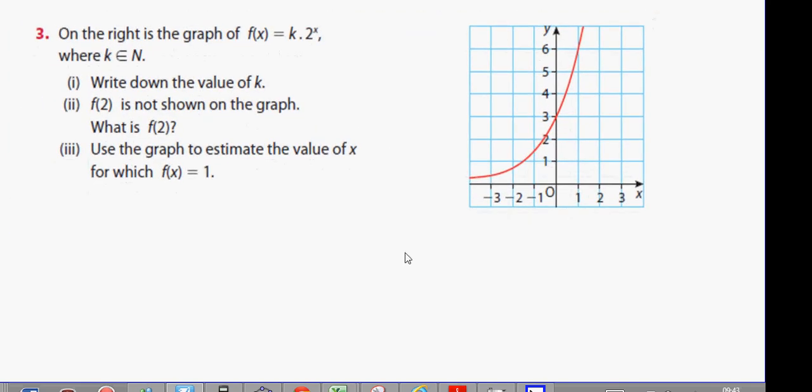Well, what we can say here is the following. Take the graph 2 to the power of x on its own. If we had f(x) equal to 2 to the power of x on its own, what would happen is when x is 0, f(0) would mean 2 to the power of 0, which would mean 1. Correct?